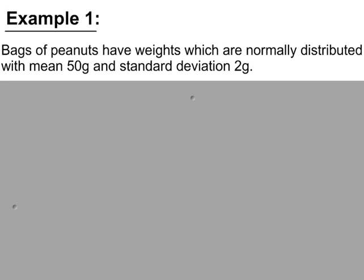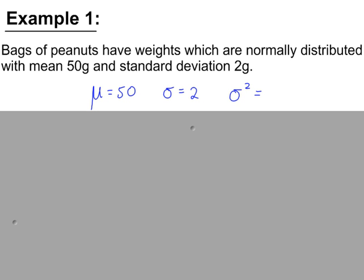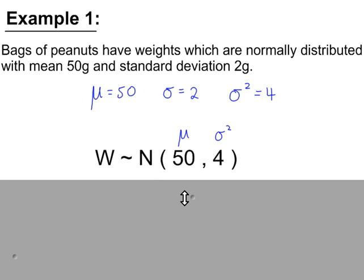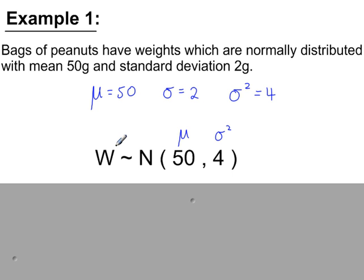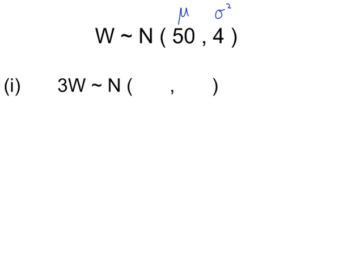Example 1: bags of peanuts have weights which are normally distributed, with mean 50 grams and standard deviation 2 grams. So the mean is 50, the standard deviation is 2, and the variance will be 2 squared, which is 4. The normal variable 3w is not the same as w1 plus w2 plus w3. This represents three different bags of peanuts, whereas 3w represents three times the weight of a single bag.